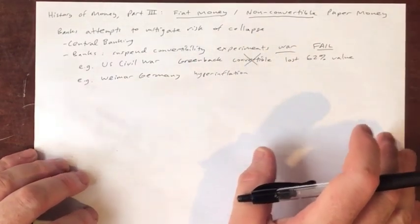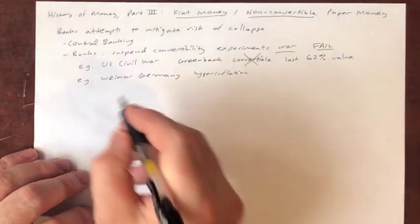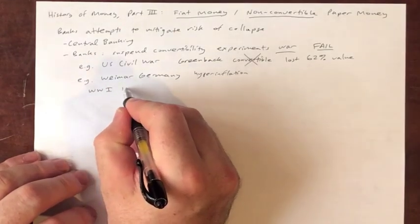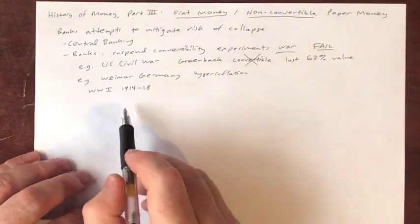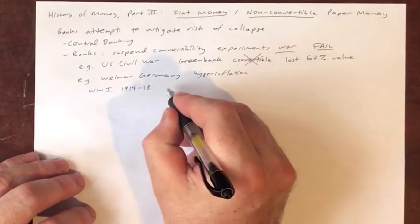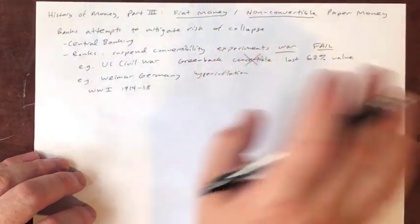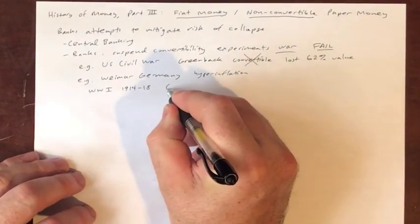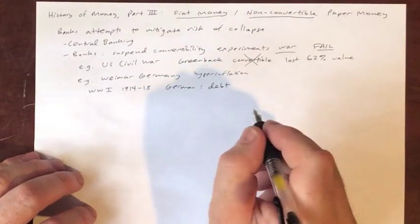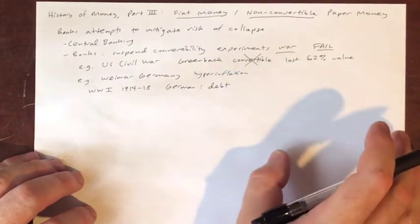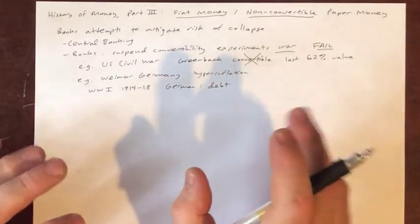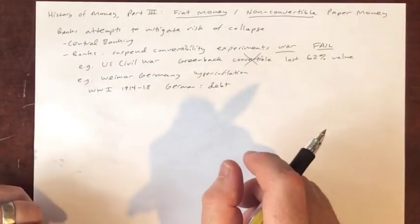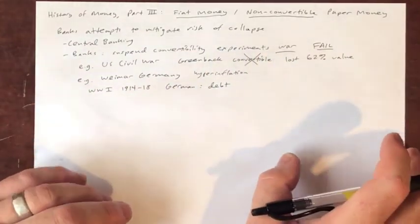Germany, in order to fight World War I — which they just called the Great War at the time, 1914 to 1918 — their strategy to pay for the war was debt. They weren't going to raise taxes; they were just going to borrow. That borrowing had a big impact on the value of the currency. Whenever governments borrow a lot, it raises the question in the minds of bondholders: are you actually going to pay this debt back?